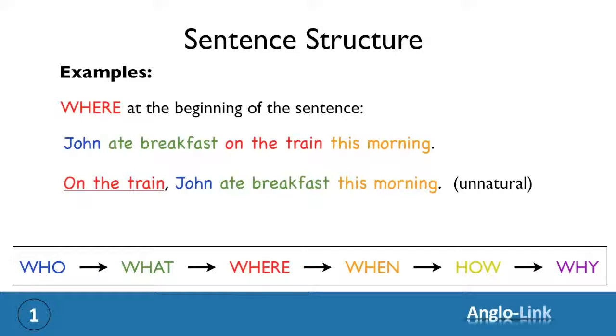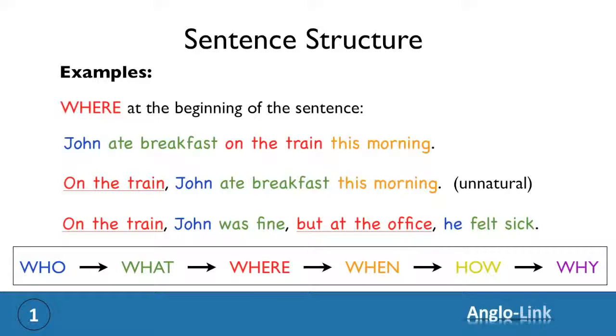However, if we contrast on the train with another place, for example at the office, then we have a good reason to put this element at the beginning of the sentence. On the train, John was fine, but at the office, he felt sick.